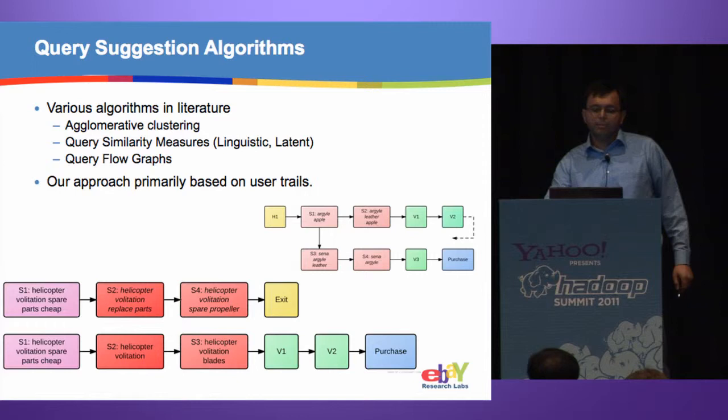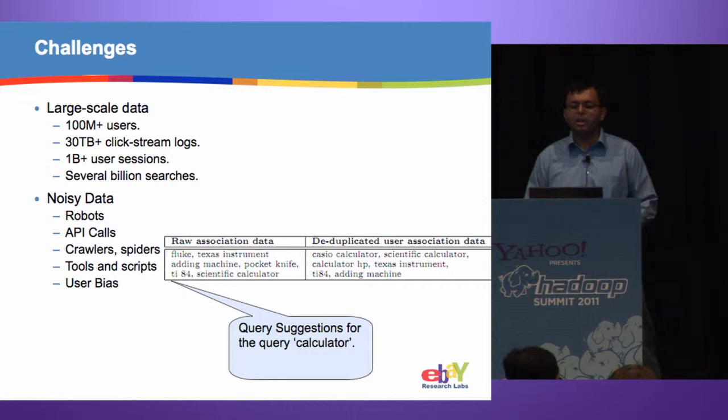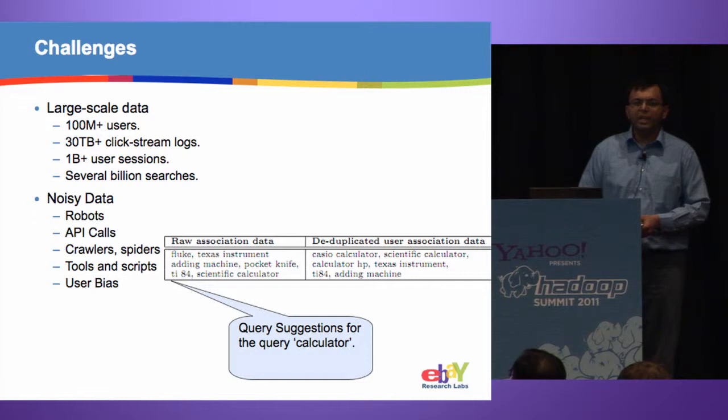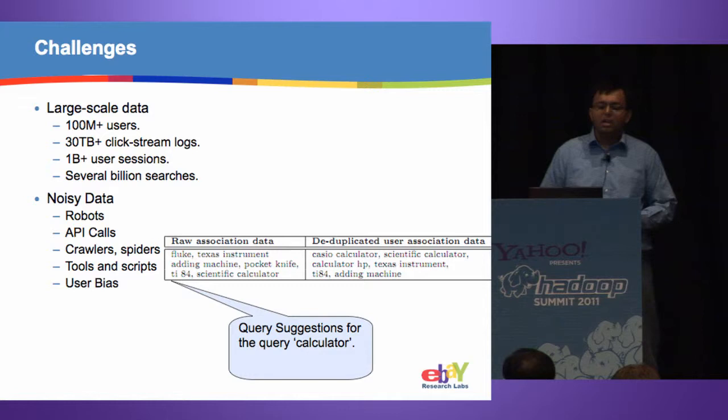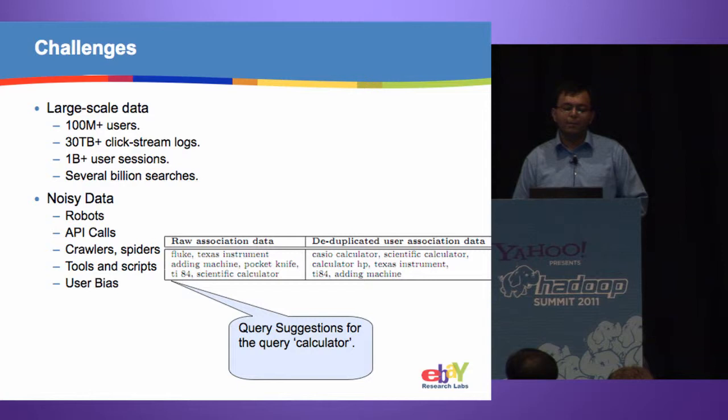Through our experience we found that building this recommendation system is not that simple — there were various challenges. The first challenge was processing large-scale data. We took a small time period on eBay and looked at data with over a billion user sessions, several billion search queries conducted by around 100 million users, spread across terabytes of data. Our first challenge was processing this data and making sense of it in a scalable and timely way.